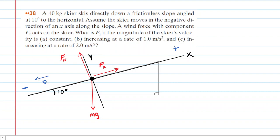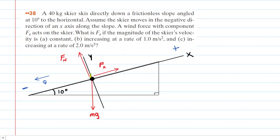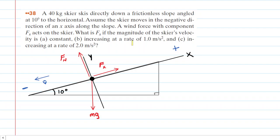The first thing we need to do is draw a free body diagram showing the forces acting on the skier as she slides down the ski slope. We have the gravitational force pulling straight down, the normal force perpendicular to the surface pointing along the positive y-axis, and a third force: a wind force with component f sub x acting on the skier. For now, we've drawn that wind force pointing up the slope in the positive direction of the x-axis.